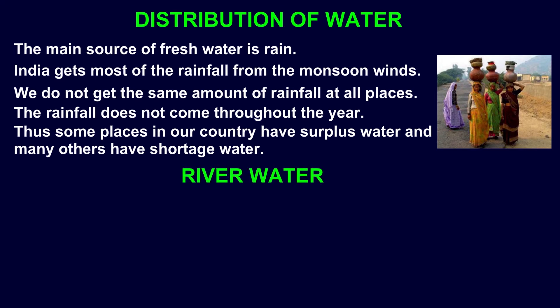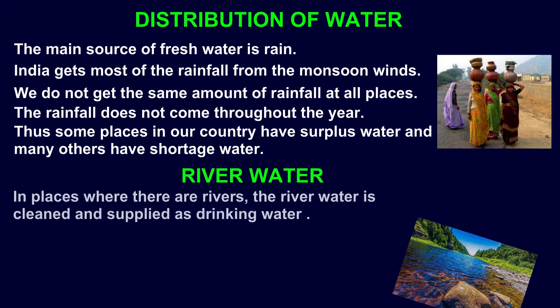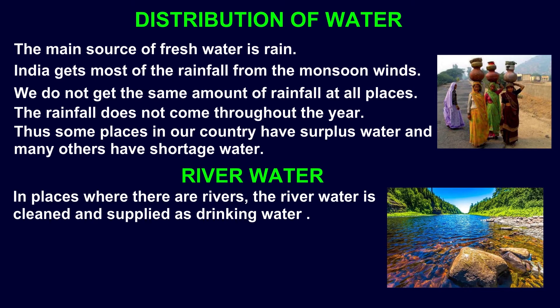River Water. In places where there are rivers, the river water is cleaned and supplied as drinking water. It is also used for irrigation.